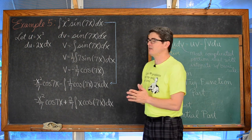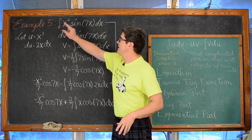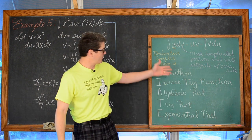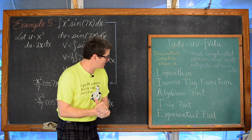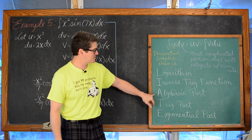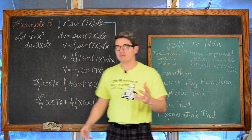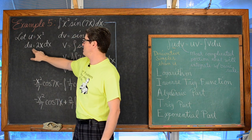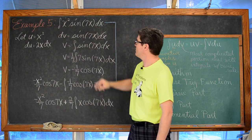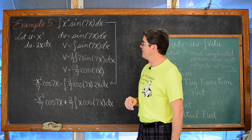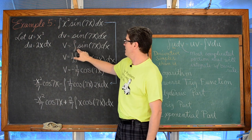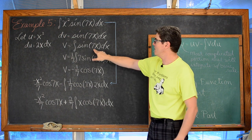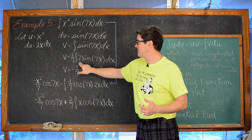This started off looking like example number 3. We had an algebraic factor in our integrand — following the LIATE acronym, that is the A, the third letter. So we let that equal u, and du is 2x dx, just dropping the power down. We let the rest of the integrand equal dv, integrated both sides, and had the indefinite integral of sine of 7x dx. We needed to let 7x be our substitution variable.